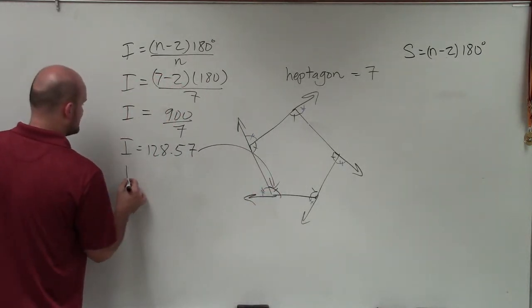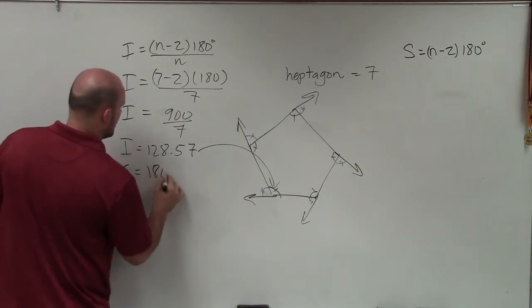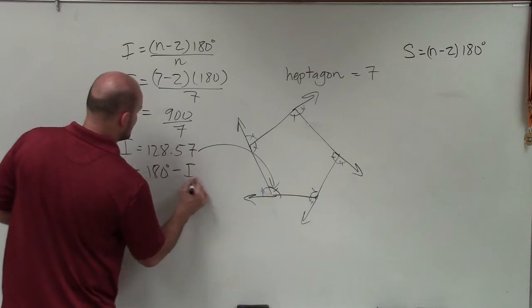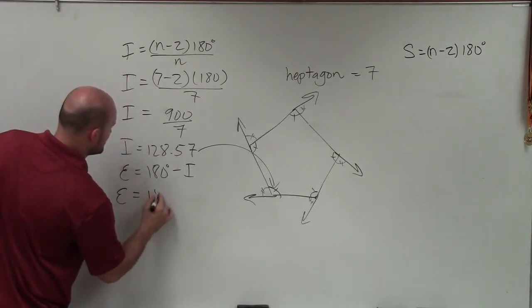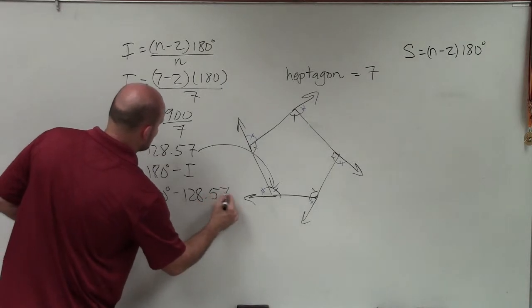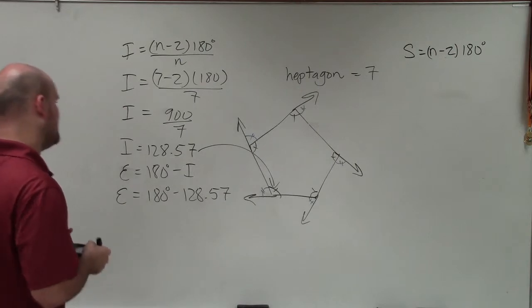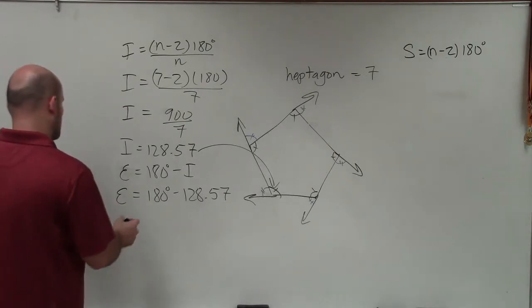So all I'm simply going to do is say that the measure of the exterior angle equals 180 degrees minus the interior angle. So 180 degrees minus 128.57, which is going to be 51.43.